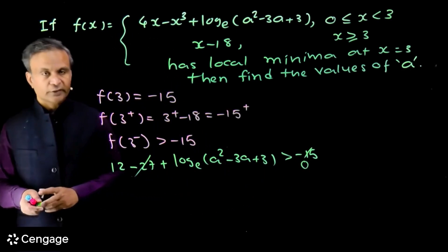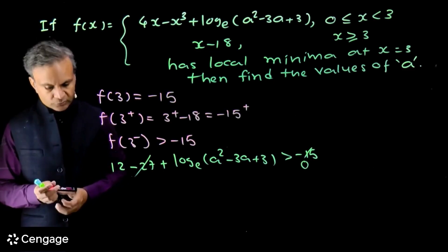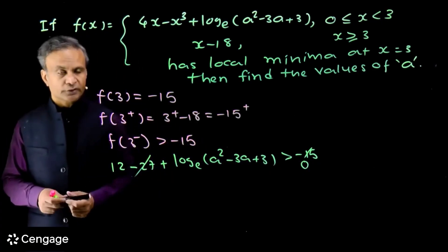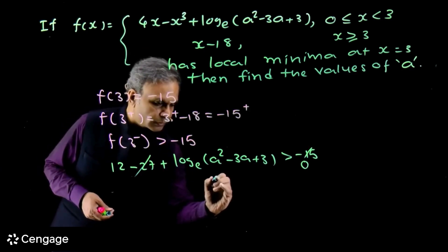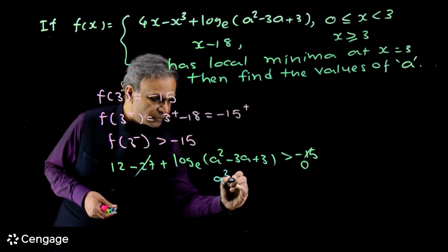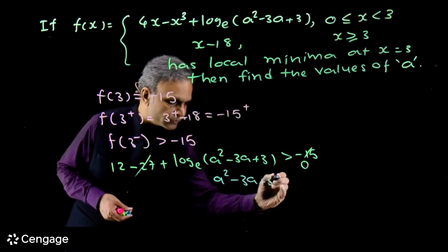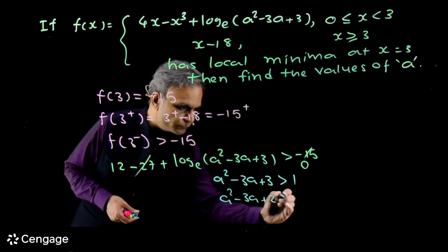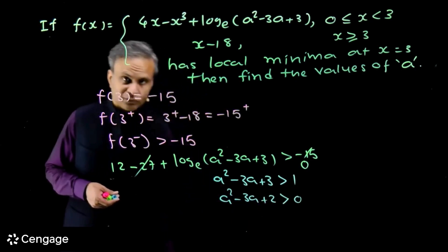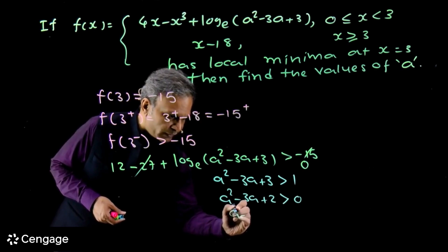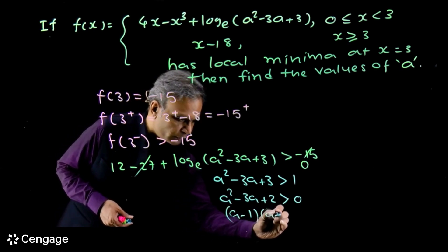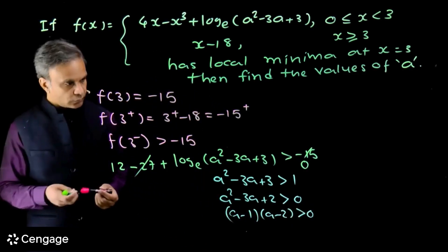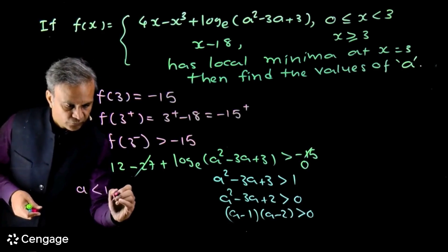We have a logarithmic inequality: log(a²−3a+3) > 0. Since the base of log is greater than 1, this gives a²−3a+3 > 1, so a²−3a+2 > 0, which factors as (a−1)(a−2) > 0.